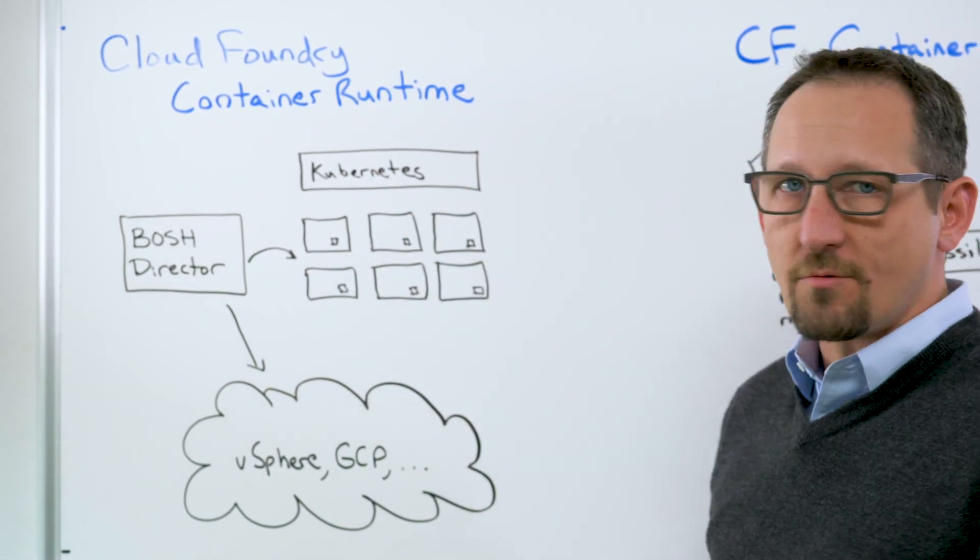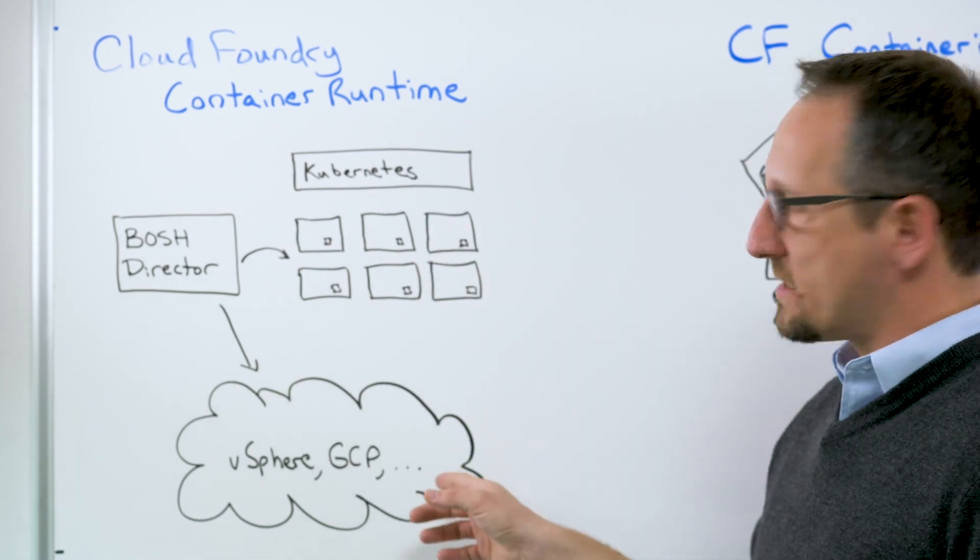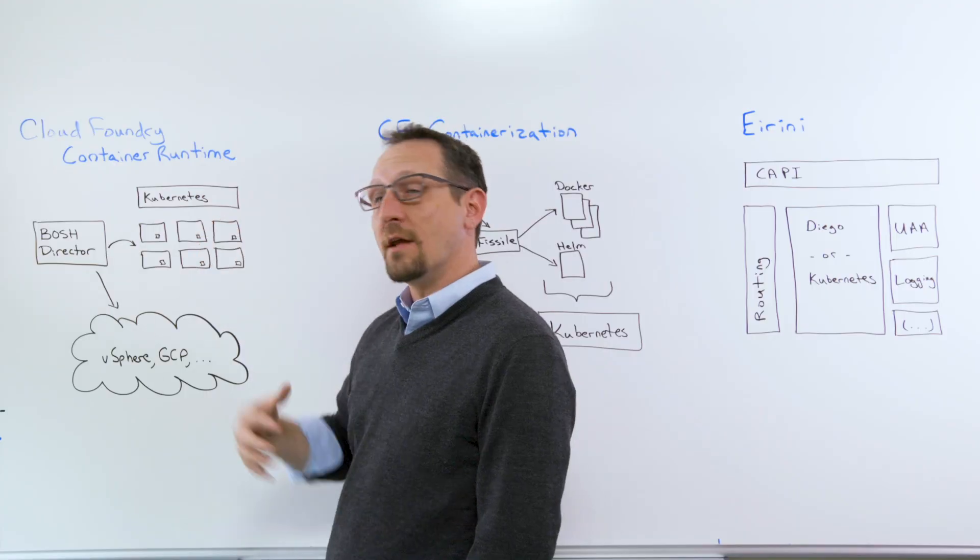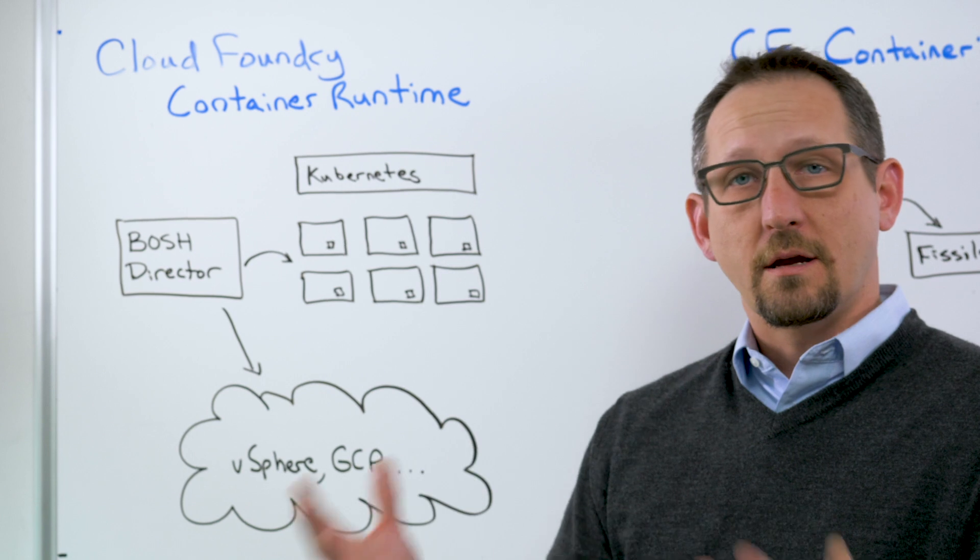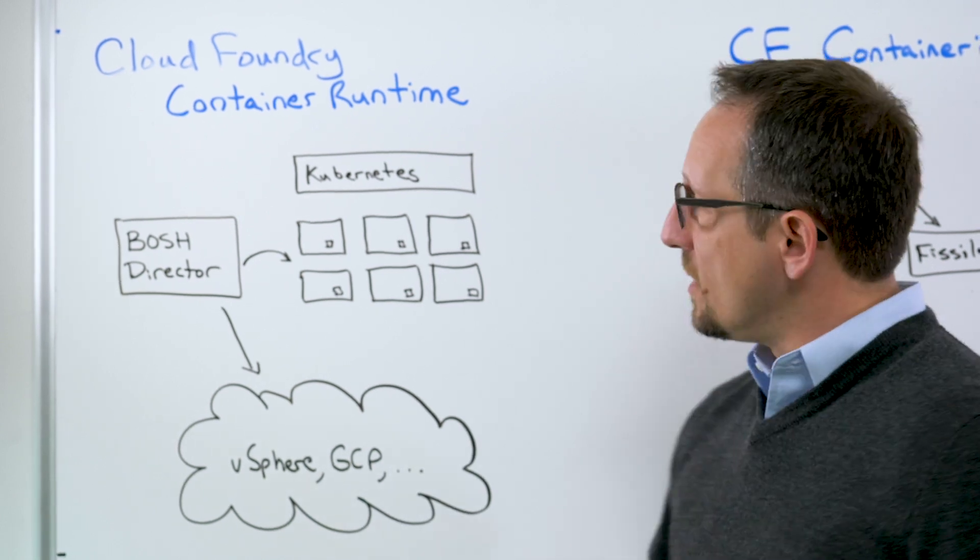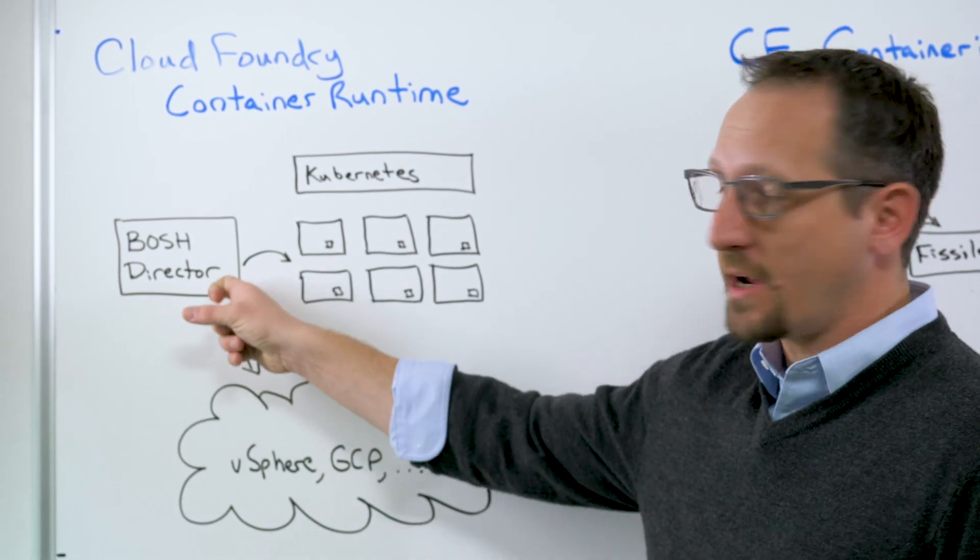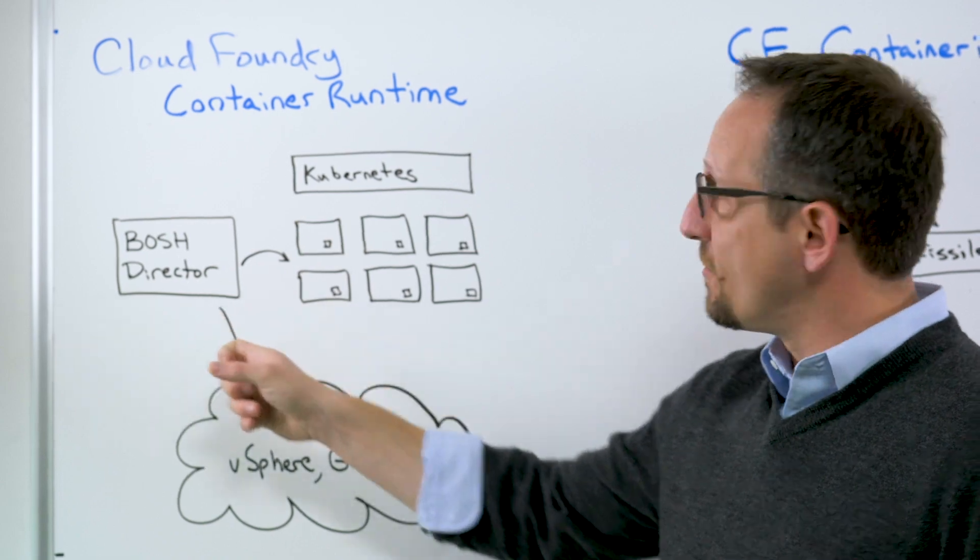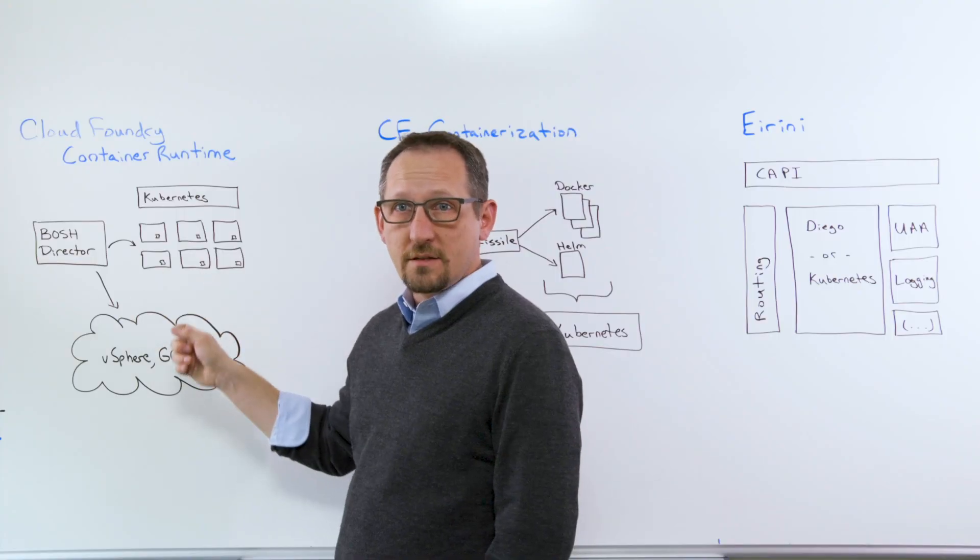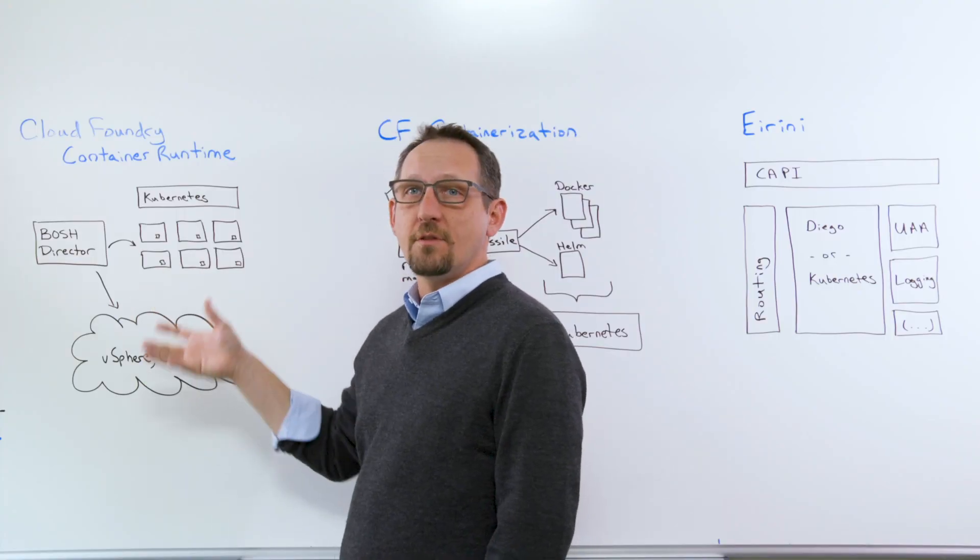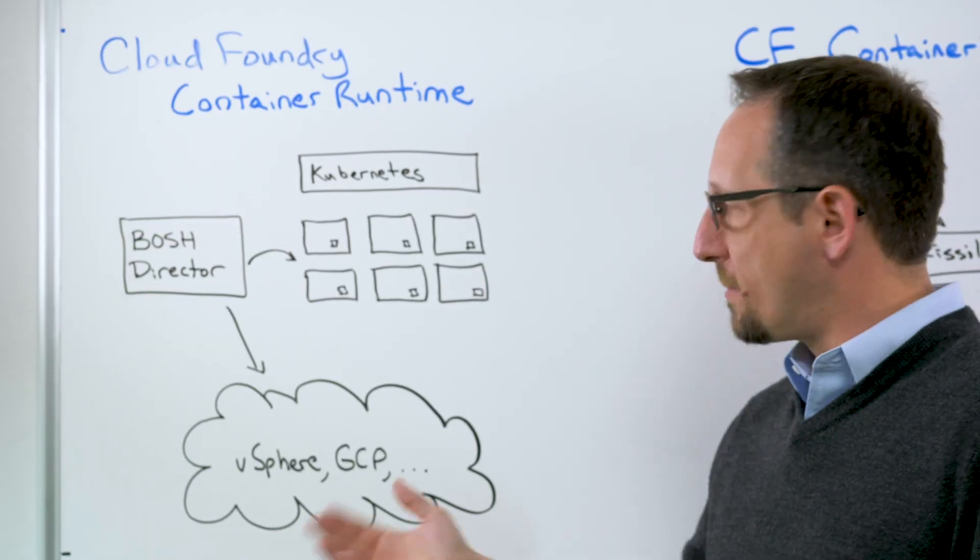But with the Cloud Foundry Container Runtime, BOSH is able to ask the infrastructure for a new VM and rejoin it to the cluster, adding the capacity that was lost back. It also can take advantage of the logic that BOSH is able to achieve for zero downtime upgrades, rolling upgrades of the Kubernetes platform within the public clouds.